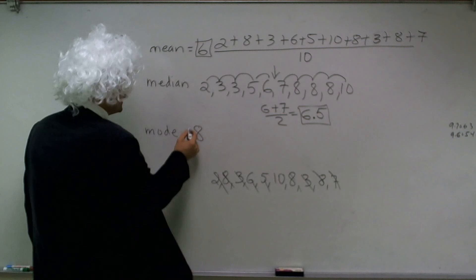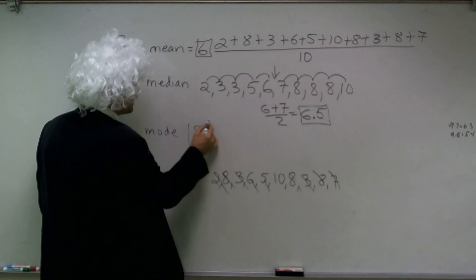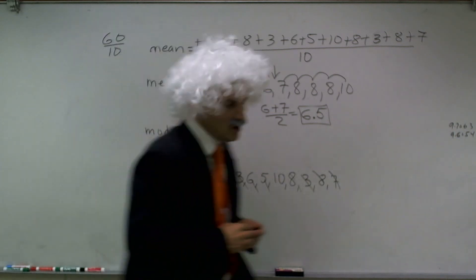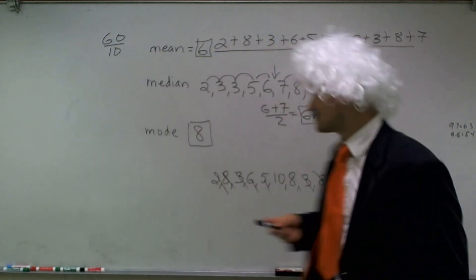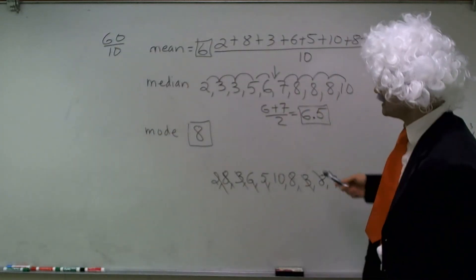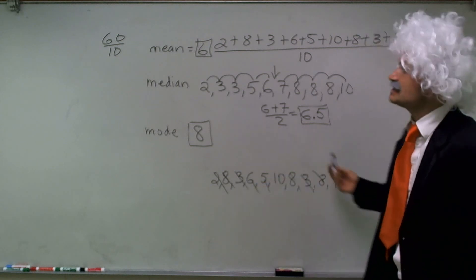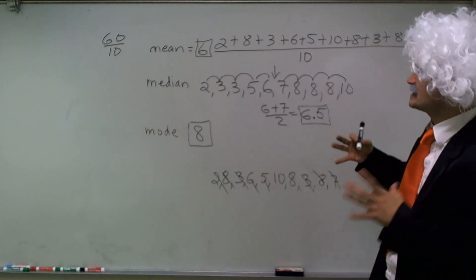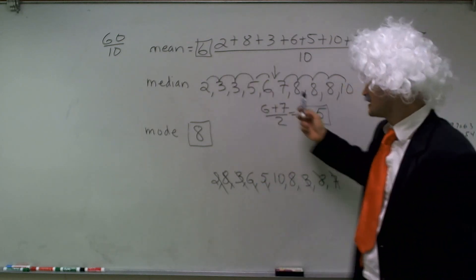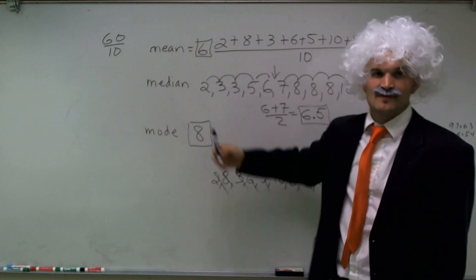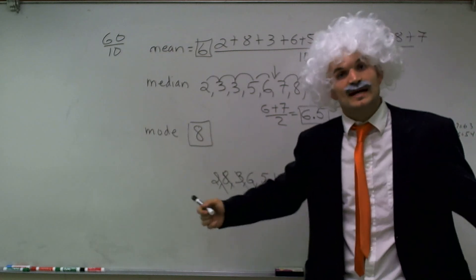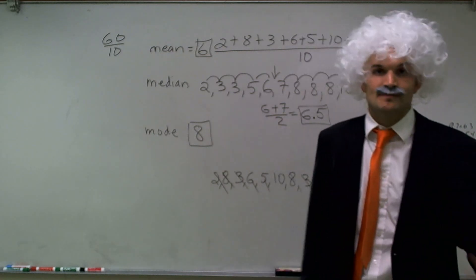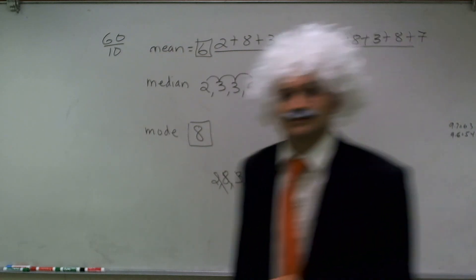So now looking at our three values for central tendency, what we notice is that of all these test scores, the central range is around 6, 6.5, and 8. And that's how you find central tendency with mean, median, and mode.